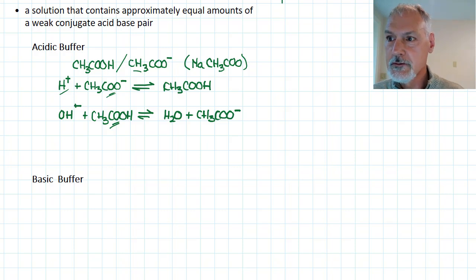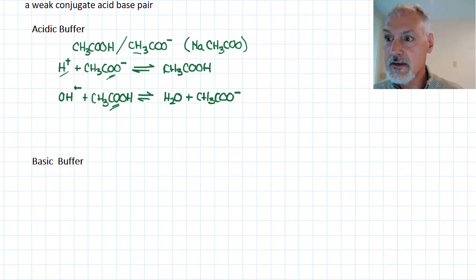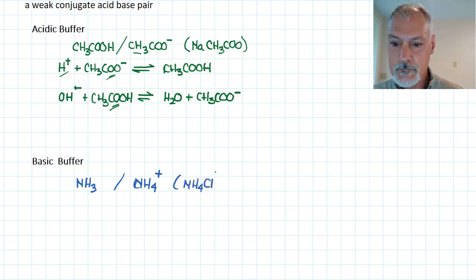In a basic buffer, our ingredients would be a weak base, say something like ammonia, and its conjugate, which would be the ammonium ion. And again, that might be provided by something like ammonium chloride. In a similar fashion, if we add acid, then the conjugate base portion of our buffer will react with that to produce the ammonium ion by shifting in the forward direction.